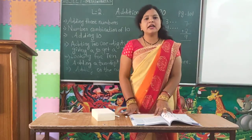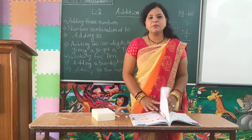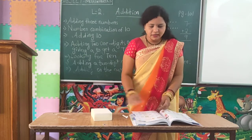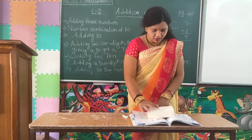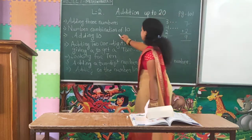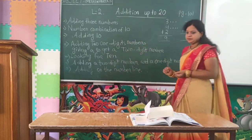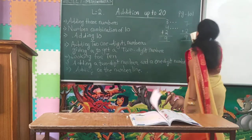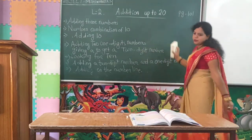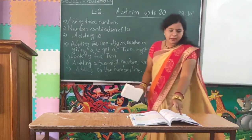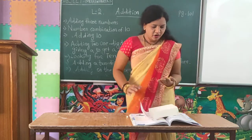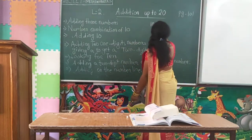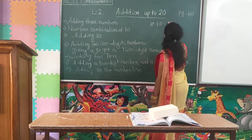So like that you can do exercise 2.9. After that, we will learn about the number combination of 10. We have to combine numbers with 10. For example, 10 plus 0 is equal to 10.